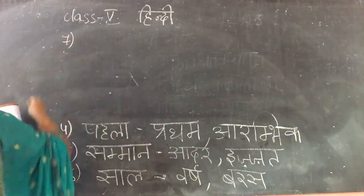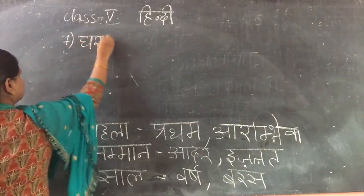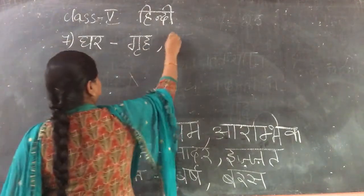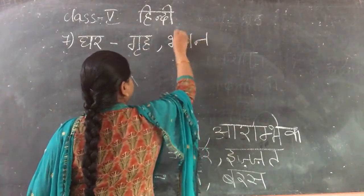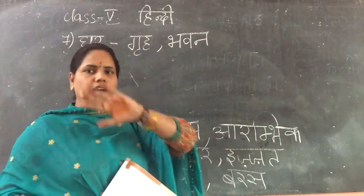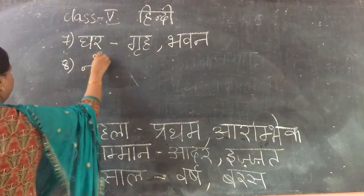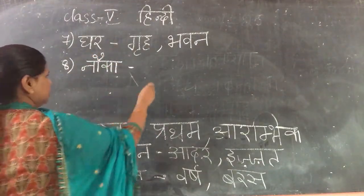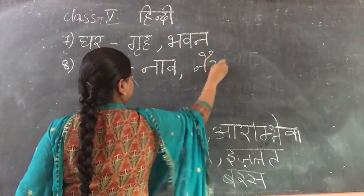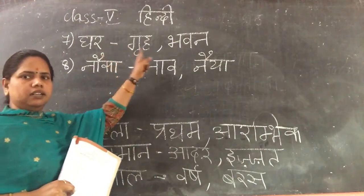Now next comes. Seventh one: Ghara means House. For house we say Grih, and also Bhavad. Ghara — Grih — Bhavad. Eighth one: Nauka means Boat. Nauka is also known as Naam, as well as Naya. Nauka — Naam — Naya.